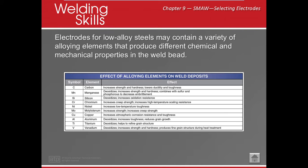Whenever we weld on carbon steel and we know there's 0.03% or more, it's considered medium or high carbon steel and we must preheat and post-heat it. There's always a payoff. We can also add deoxidizers like silicon, nickel, or copper to help, depending on whatever material we're working with.